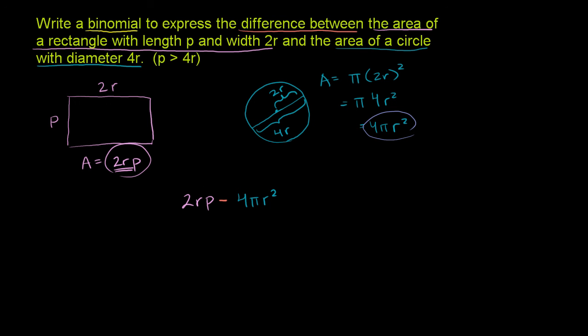This is a binomial. We have two terms here. If there were three terms, it would be trinomial. If there was an arbitrary number of terms, you'd call it a polynomial. If you only have one term, you'd call it a monomial. So we are done.